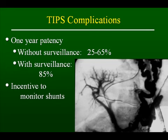There are complications associated with the TIPS shunt. Certainly, the patency of the shunt is of most interest. This slide illustrates the reason why Doppler surveillance is so important. The one-year patency rate without surveillance is as low as 25%, but with Doppler surveillance that shunt can be kept open at a rate of about 85%. So there is a strong incentive to monitor these shunts.